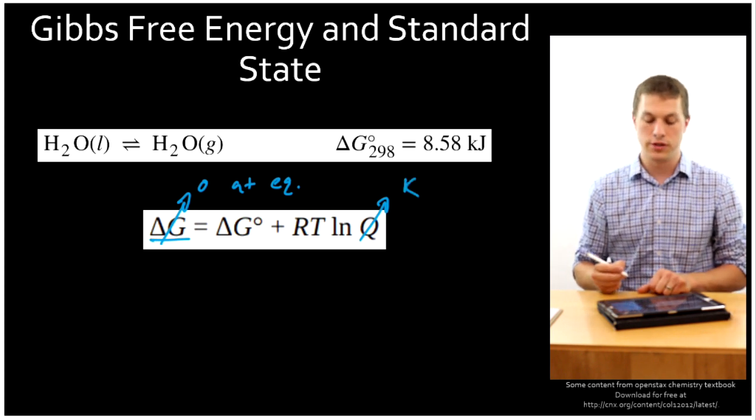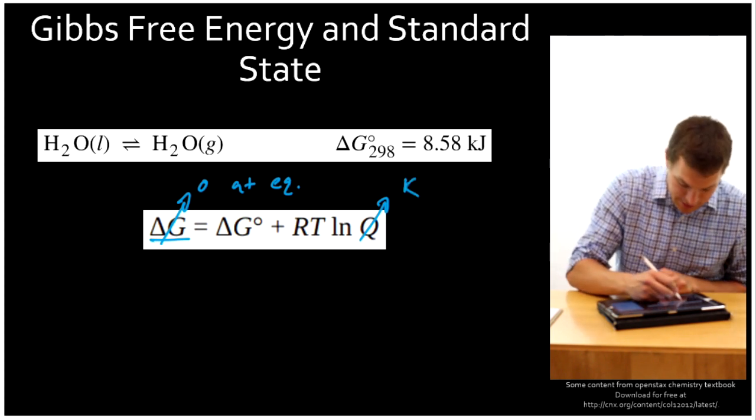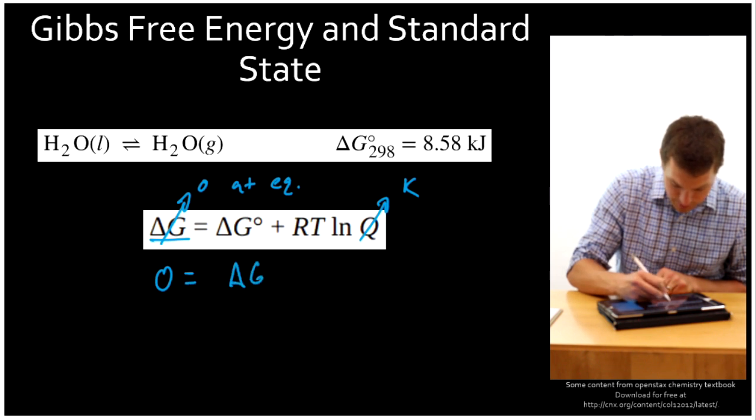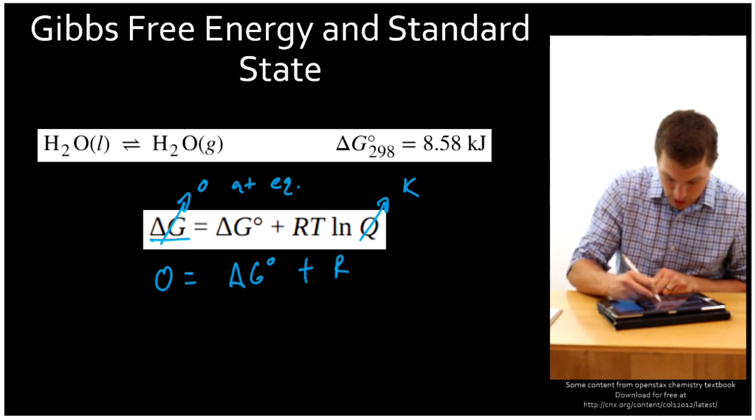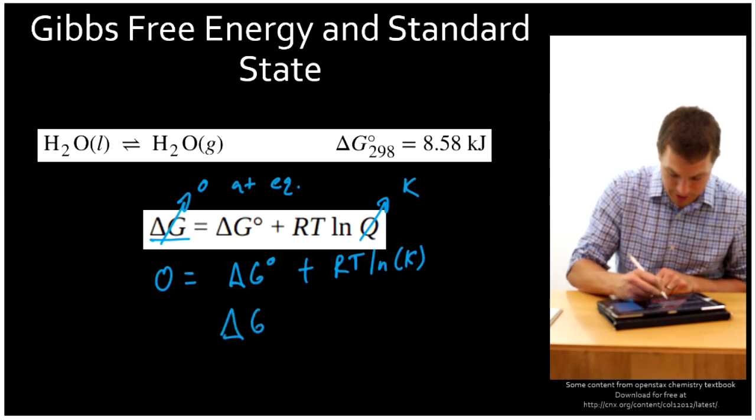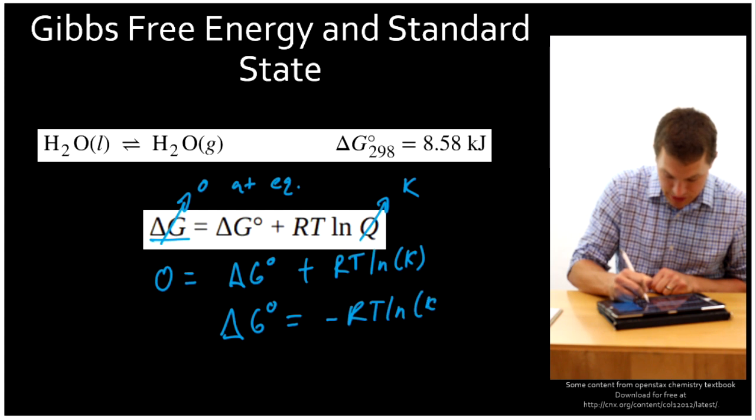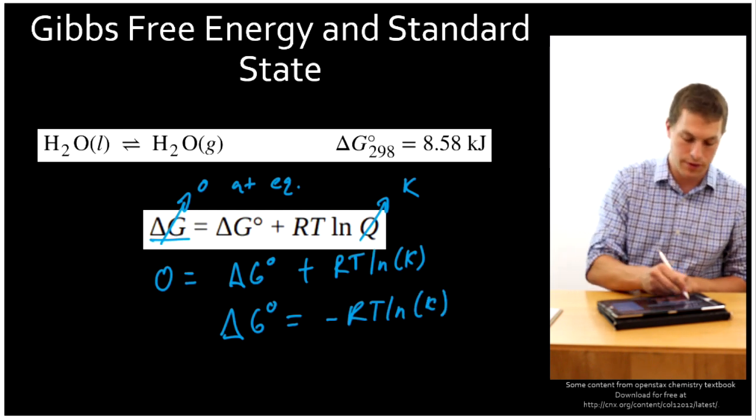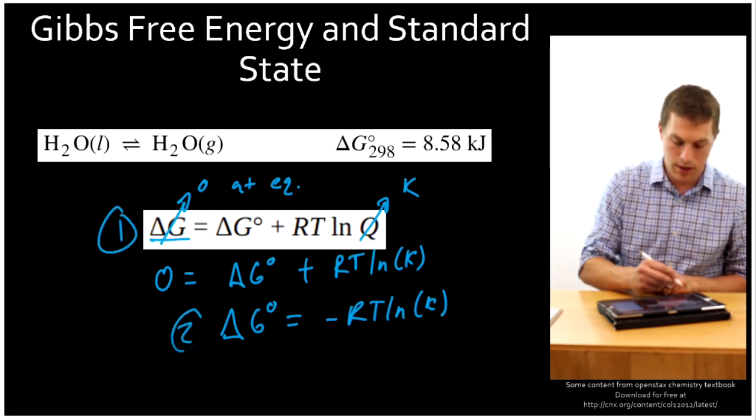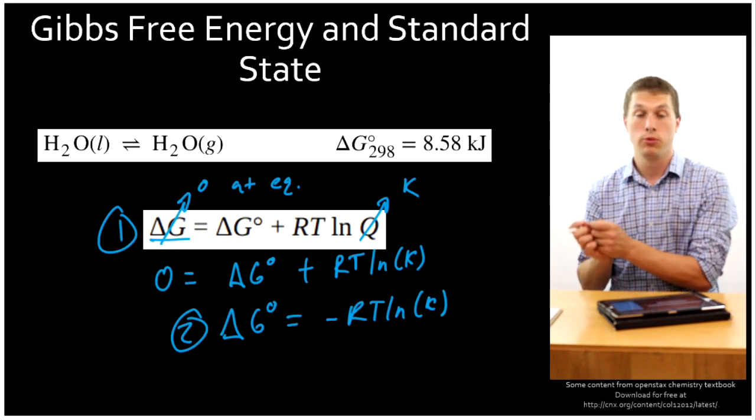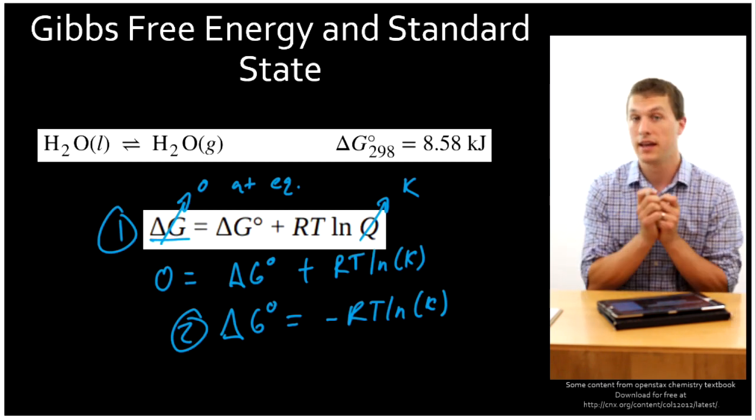So another really useful version of this equation tells us that zero equals delta G standard state plus RT ln K. And then I can rearrange that and we get delta G standard state equals negative RT ln K. So these two equations are really useful to think about relating equilibrium and Gibbs free energy.